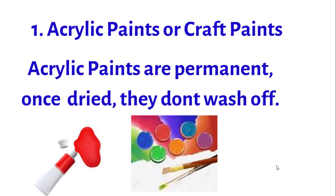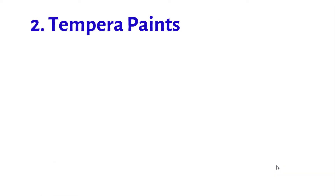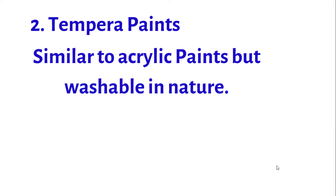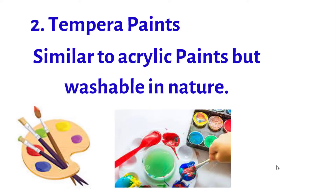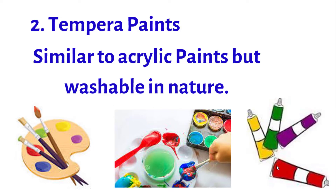Number 2: Tempera Paint. Very similar to acrylic paint, but washable in nature. It dries and fades in color over time, compared to acrylic that dries glossy and doesn't fade as much. Use tempera paint for cheap projects where the longevity of the colors doesn't matter.